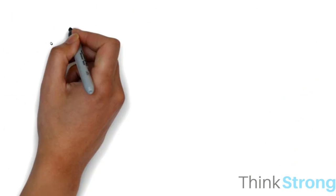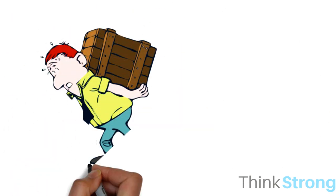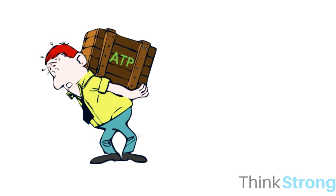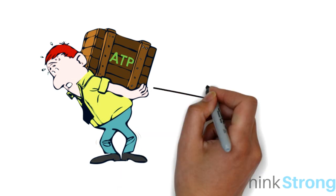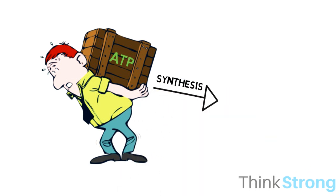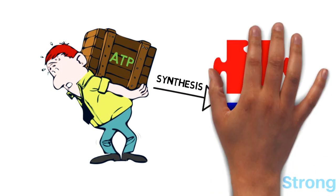ATP is a big and heavy molecule, so we cannot carry a huge amount of it around. As a result, it has to be synthesized when we need it, meaning our body has to create it through a combination of different elements.